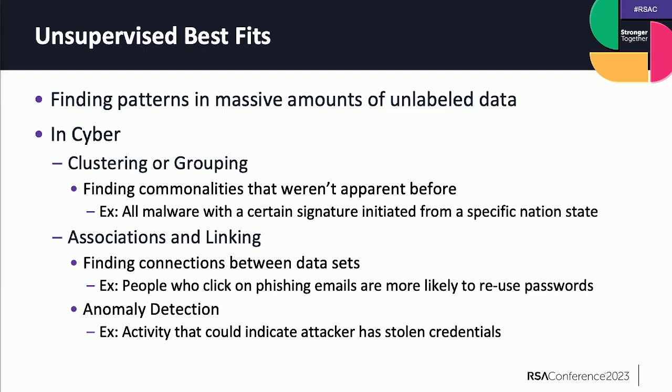You can also find associations you might not have seen before. If you have a ton of users and some are always clicking on phishing links, an unsupervised model might find the association that they also happen to be people who have reused their passwords, or they're all executives, or they're all in marketing. Seeing these hidden associations that human beings may not be able to see in all the data, or may not have been looking for, is very powerful.